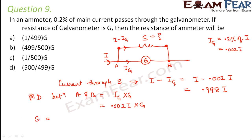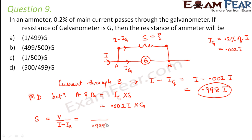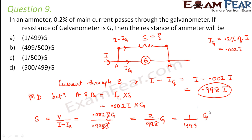To find S, use S = V / (I − I_G) = (0.002I × G) / (0.998I). The I terms cancel, giving S = 0.002/0.998 × G = 2/998 × G = G/499. So the shunt resistance is G/499, making option A the correct answer.